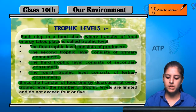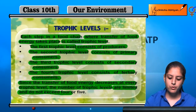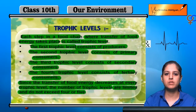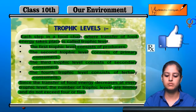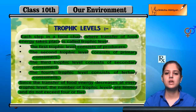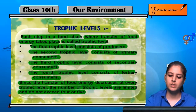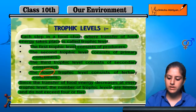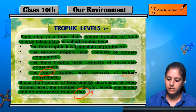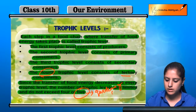Therefore, the maximum number of trophic levels is limited — only 4 to 5. The maximum levels are limited to 4 and 5. The 4th level is tertiary consumers and the 5th level is the maximum limit.